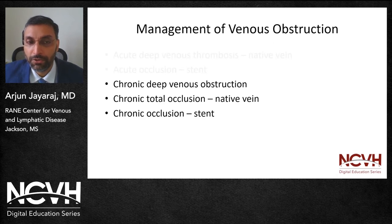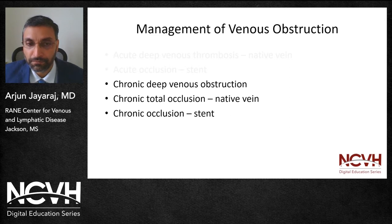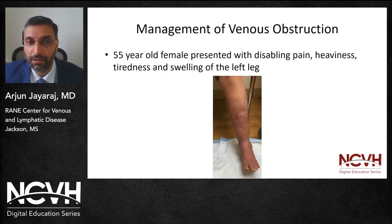Moving on to chronic obstruction, as previously noted, it could involve the native vein or a previously placed stent, and it can be just obstruction or occlusion. Here we have a 55-year-old lady who presented with disabling pain, heaviness, tiredness, and swelling of the left lower extremity. You'll also notice that she has hyperpigmentation and lipodermatosclerosis.